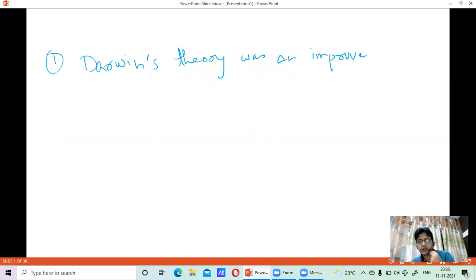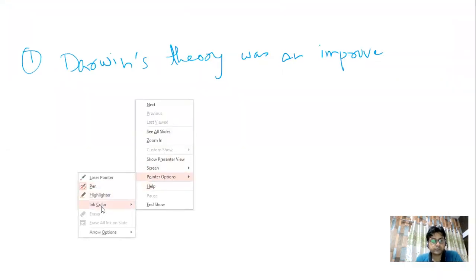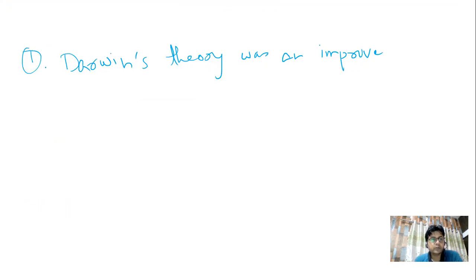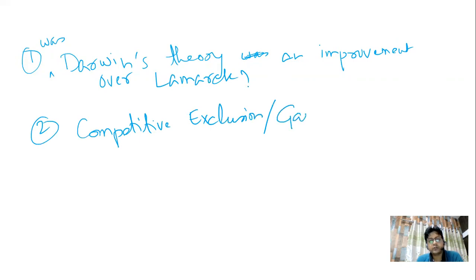Okay students, this is a short video on the questions of day two. There were two questions asked on day two. The first one was Darwin's theory - the question was: was Darwin's theory an improvement over that of Lamarck? And the second question was regarding competitive exclusion, which is nothing but Gauss's rule.